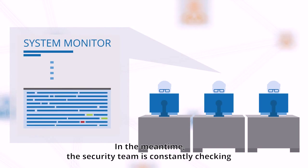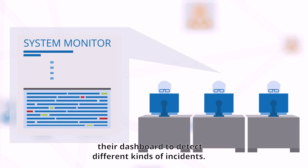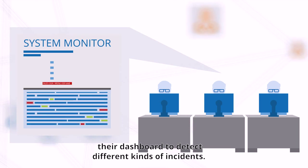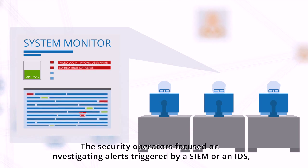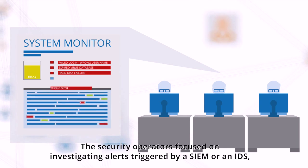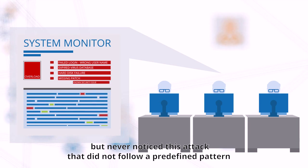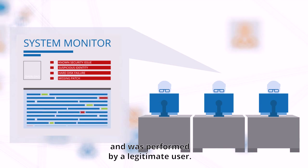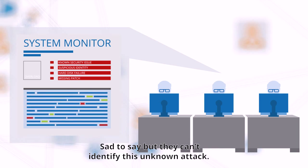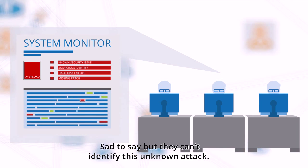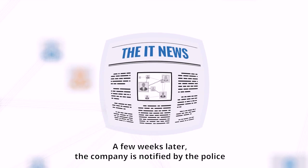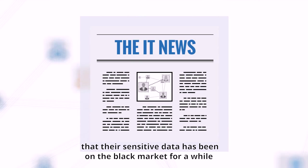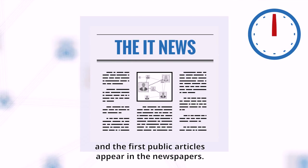In the meantime, the security team is constantly checking their dashboard to detect different kinds of incidents. The security operators are focused on investigating alerts triggered by a SIEM or an IDS, but never noticed this attack that did not follow a predefined pattern and was performed by a legitimate user. They can't identify this unknown attack, and this breach has slipped through their hands. A few weeks later, the company is notified by police that their sensitive data has been on the black market for a while, and the first public articles appear in the newspapers.